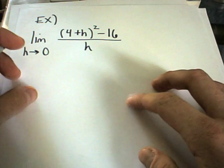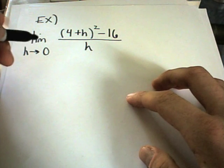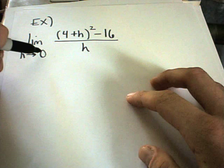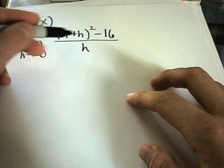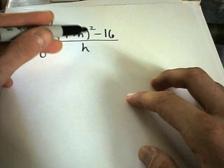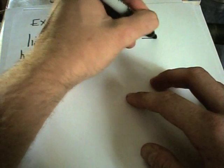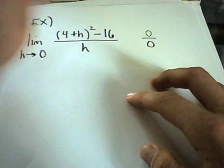In this limit example, we'll try to plug in h equals 0. Notice if we do plug in h equals 0, we'll get 4 squared, which is 16, minus 16. So we'll get 0 on top and clearly we're getting 0 on the bottom.